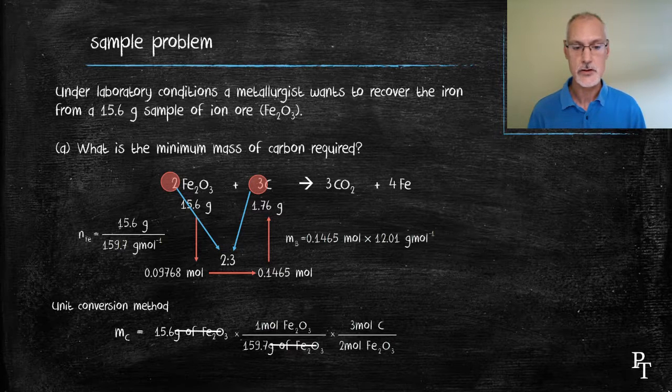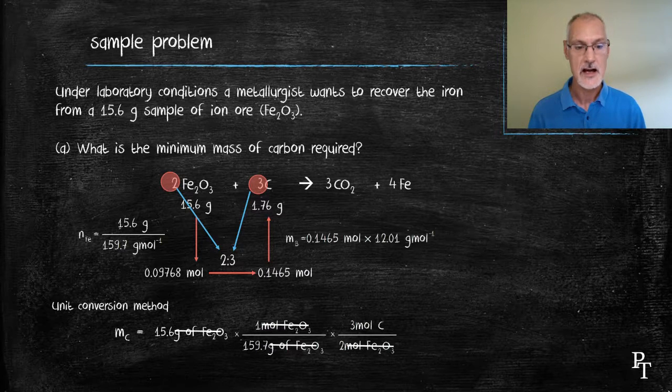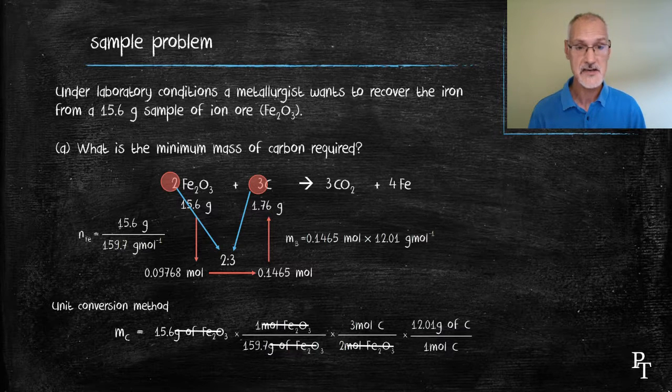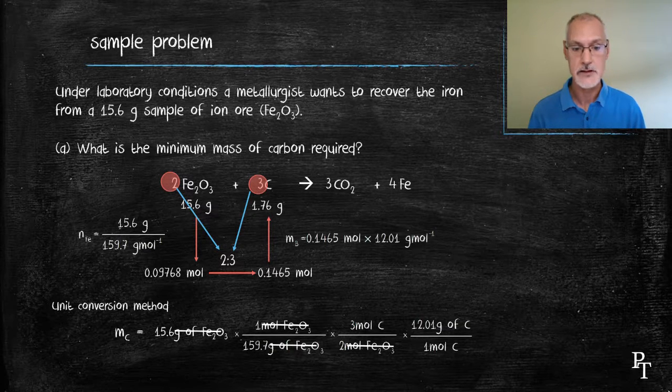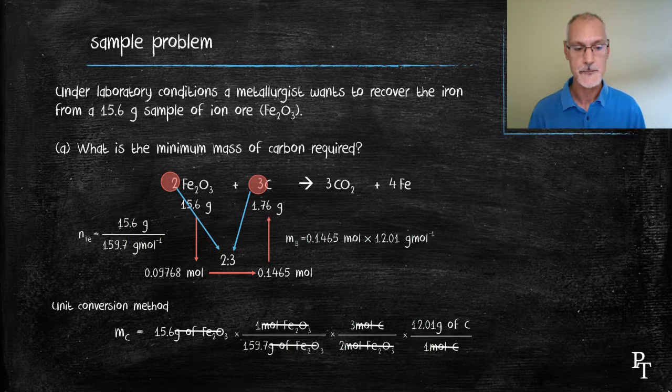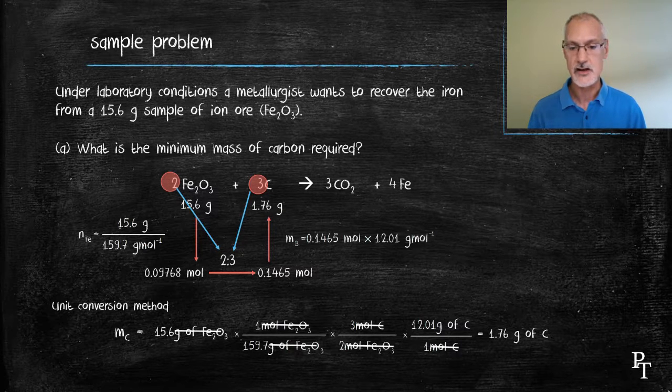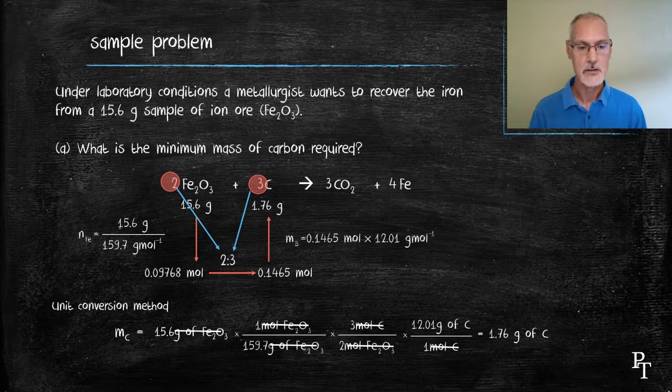My next conversion uses the coefficients in the equation, the 3 and the 2. And again, the iron oxide is located so that it will cancel out of my expression. And I now would be arriving at the moles of carbon. My last step is to multiply it by the molar mass of carbon, 12 grams per mole, and the moles of carbon cancel. So performing that calculation, I'll arrive at exactly the same answer. But here it's shown using unit conversion. Both methods will arrive at the same answer.